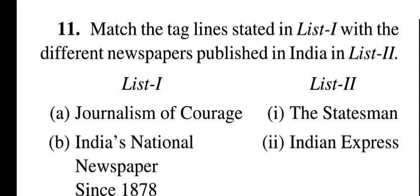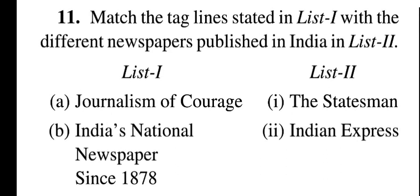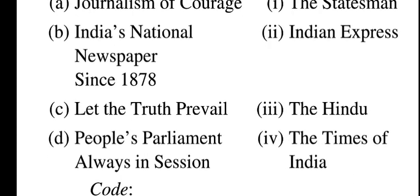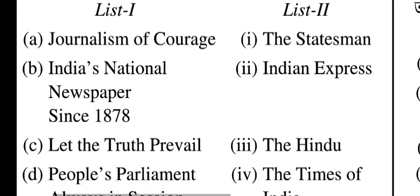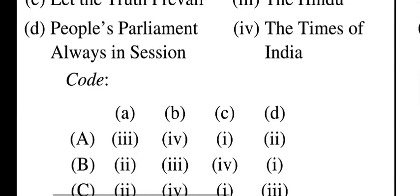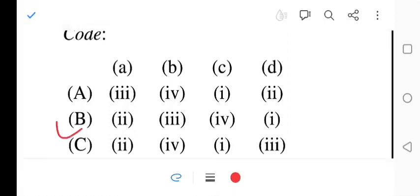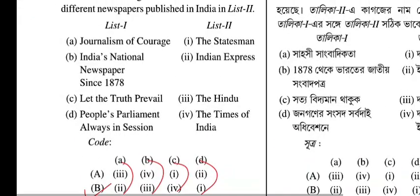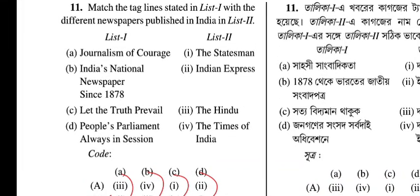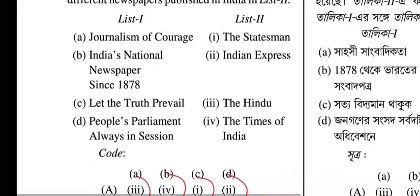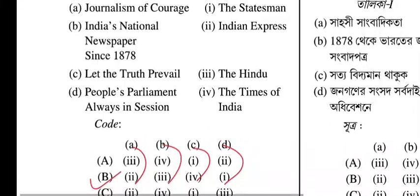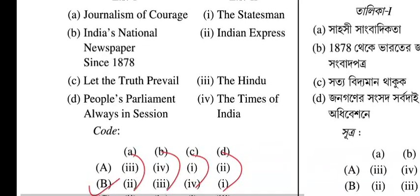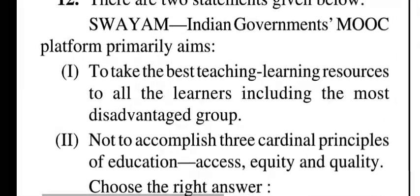Question eleven: match the tagline in list one with different newspapers published in India in list two. List one: journalism of courage; India's national newspaper since 1878; let the truth prevail; people's parliament always in session. List two: Indian Express, The Hindu, The Times of India, The Statesman. The correct answer is: A (journalism of courage) = Indian Express; B (India's national newspaper since 1878) = The Hindu; C (let the truth prevail) = The Times of India; D (people's parliament always in session) = The Statesman.